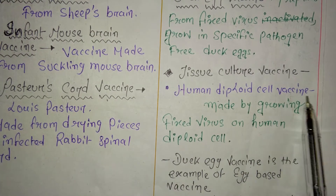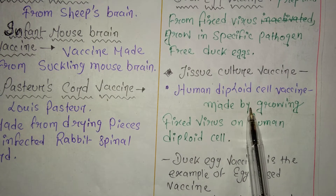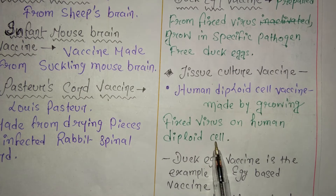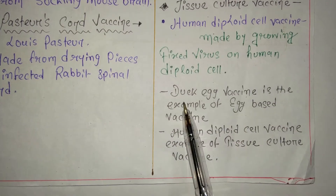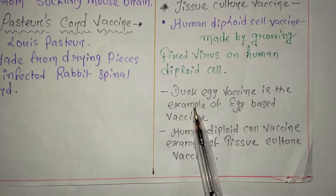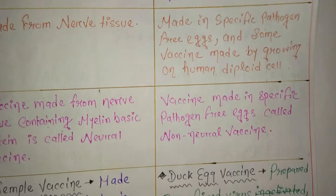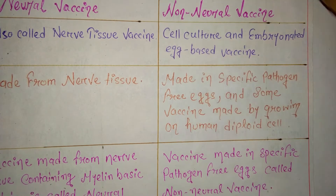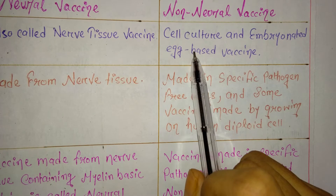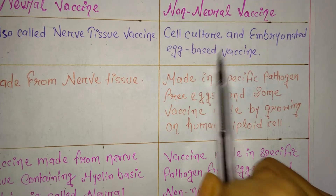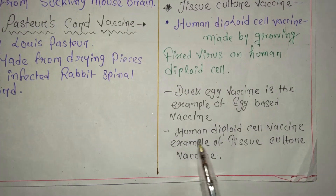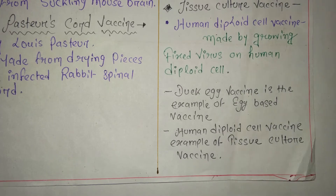The WI-38 vaccine is made from the female fetus brain cells. The fixed virus is grown on human diploid cells. To recap: duck egg vaccine is an example of embryonated egg-based vaccine, and human diploid cell vaccine is an example of tissue culture vaccine.